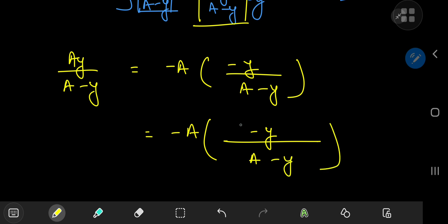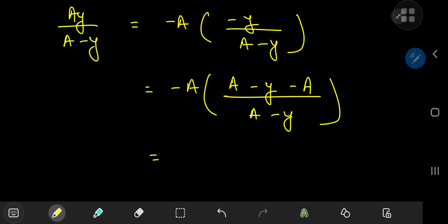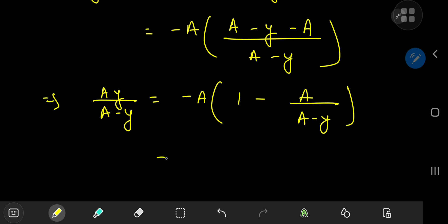So that implies that ay divided by (a - y) equals negative a times (a - a) divided by (a - y). So expanding the right-hand side, we have negative a plus a² divided by (a - y).